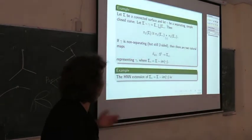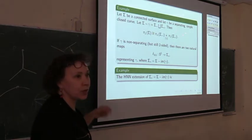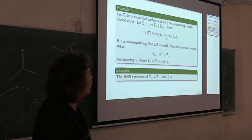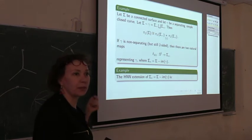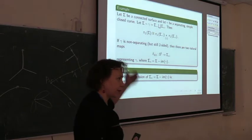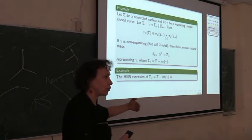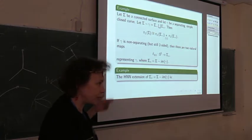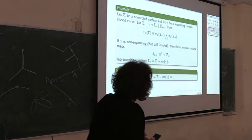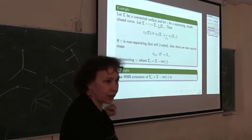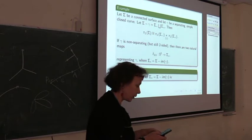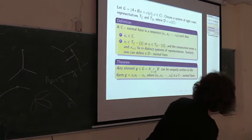As another example: if you have a connected surface with a non-separating simple closed curve, you can always represent the fundamental group of the surface as an amalgamated product of two free groups, which are the fundamental groups of the two pieces obtained by cutting along a separating closed curve. If the curve is non-separating, then you get an HNN extension, where the injective homomorphism maps into the same group.